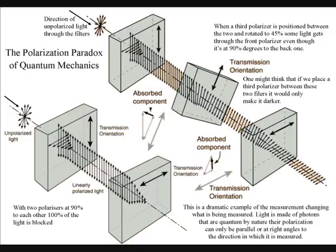Light is made of photons that are quantum by nature. Their polarization can only be parallel or at right angles to the direction in which it is measured. All the photons passing through the first polarizer are vertically polarized.